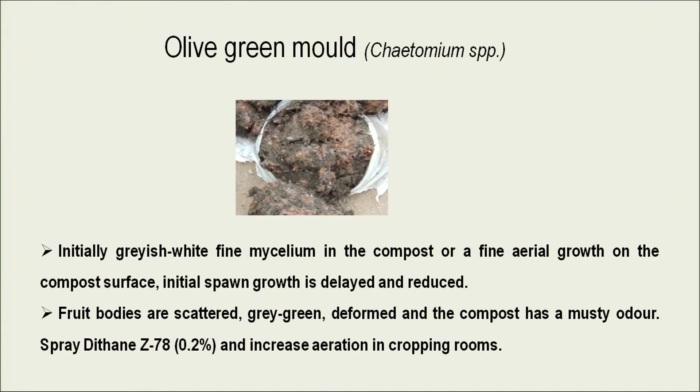Another competitor is oliguri mold or Chaetomium mold. In this case, greenish colored fruit bodies are seen; the color may vary from greenish to gray. The fruit bodies are deformed and the compost has a musty odor. We can manage this by spraying Dithane Z-78 at the rate of 0.2 percent and increasing proper ventilation or aeration in the cropping room.